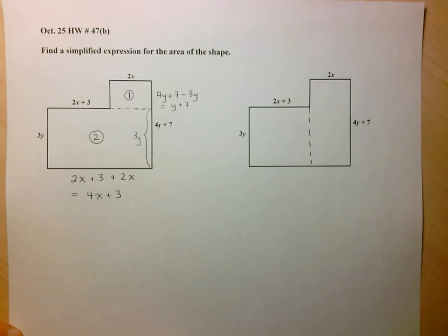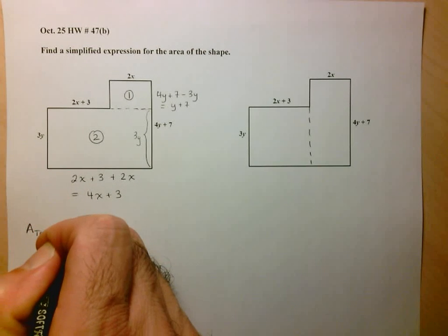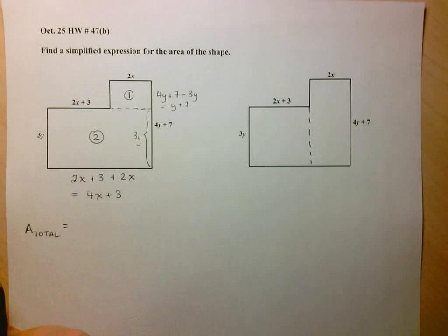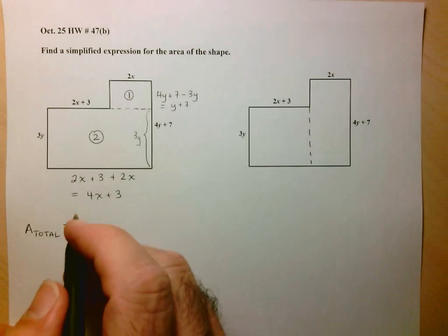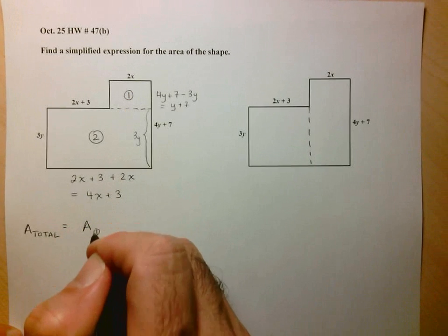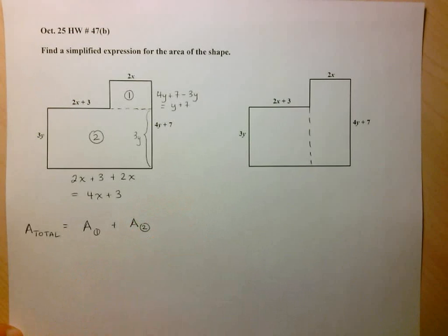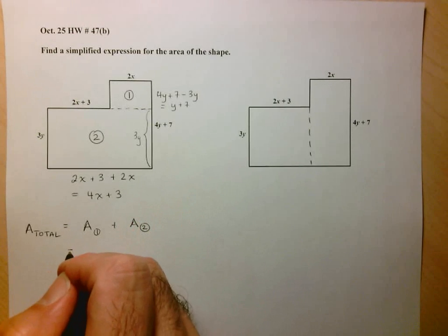Now I have enough information to find the area. So I want to find the total area. Notice here how I'm being very clear about what I'm finding. And since I've labeled these two rectangles 1 and 2, I know that the total area is going to be the area of rectangle 1 plus the area of rectangle 2.